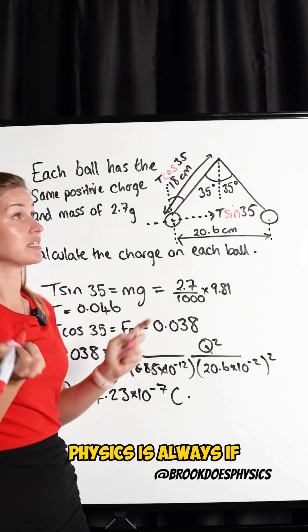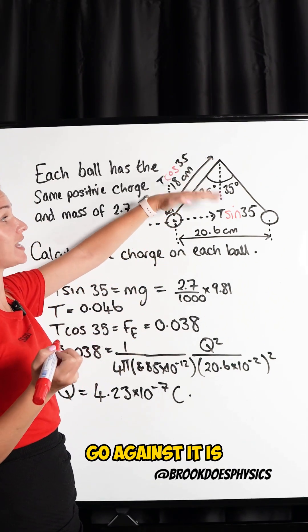Or my trick of physics is always if you go through the angle it's always going to be cosine. Go against it, it's always sine.